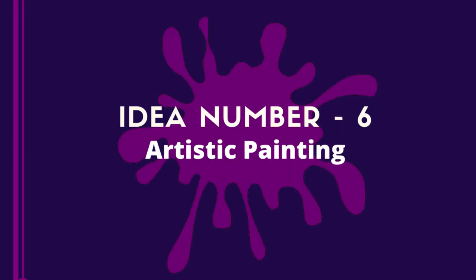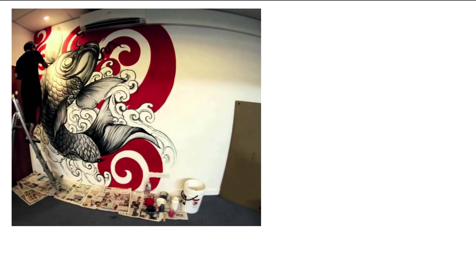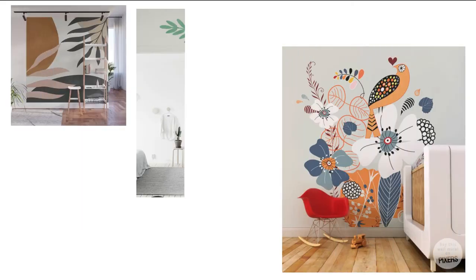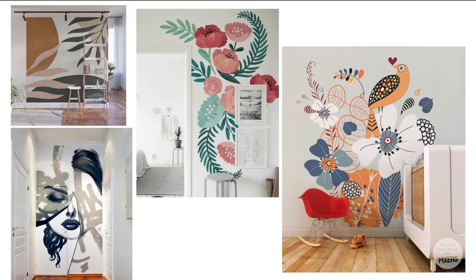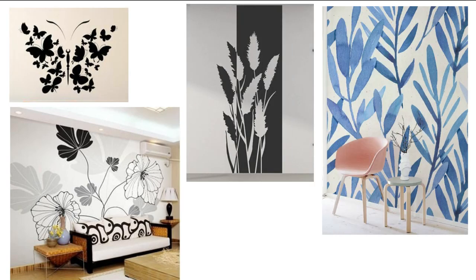Idea number six: artistic painting. If you have good art skills, just go with this idea. In this painting, you can make anything on the wall — any design, human figures, natural things, faces, distorted things, etc. It all depends on your creativity; it can be anything. You just need to enhance the wall with your art skills. If you are not confident on your first attempt, I recommend you use a single paint color — in that case, you just have to focus on the exterior face of the shape.